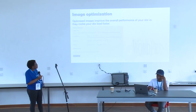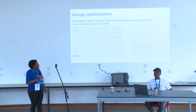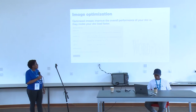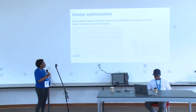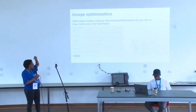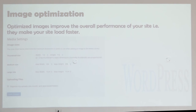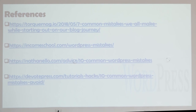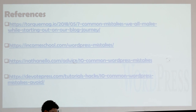Another common mistake is image optimization. Optimized images improve the overall performance of your site and make it load faster. In the media settings, you can set image size, thumbnail size, and more — saving those changes helps optimize your images on upload. I've put some references from common sites and what I found online. I hope it helps someone, especially the newcomers. Thank you.